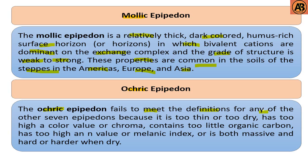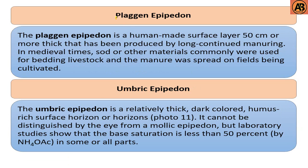The next one is the ocric epipedon. The ocric epipedon fails to meet the definitions for any of the other seven epipedons because it is too thin or too dry, has too high a color value or chroma, contains too little organic carbon, has too high a value or melanic index, or is both massive and hard or harder when dry.